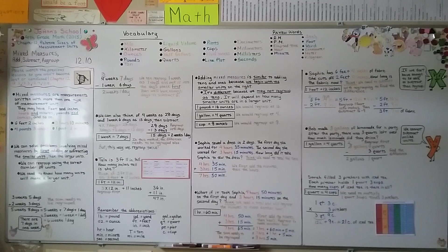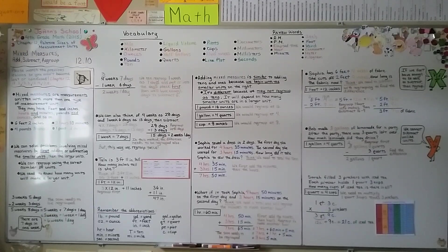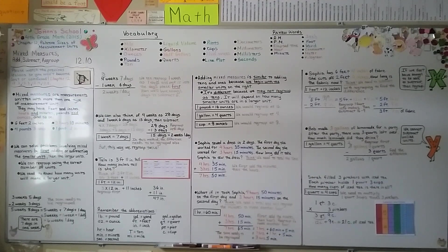Our next lesson, 12.11, we're going to talk about patterns in measurement units and make number pairs in tables. I hope you're doing well. Since there are no comments on my videos anymore because they're mostly made for under 13, you can always send me a message on Facebook at Joann's School — there's a link in the description. See you next time, bye!